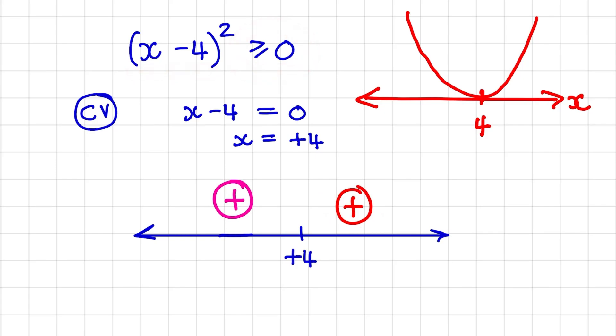So if we want to interpret this inequality, where is x minus 4 squared bigger or equal to 0, we can see that it will be bigger or equal to 0 for all values of x. So the graph would always be positive.